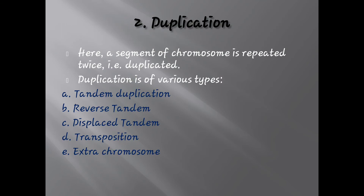The second type of structural alteration is duplication, where a segment of chromosome is repeated twice — that is, it is duplicated. Duplication is of various types: tandem duplication, reverse tandem, displaced tandem, transposition, and extra chromosomal.